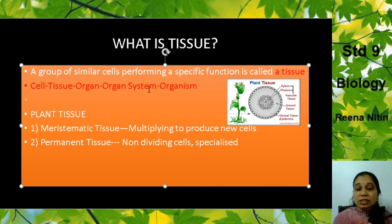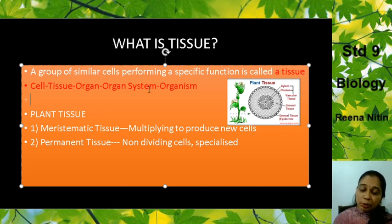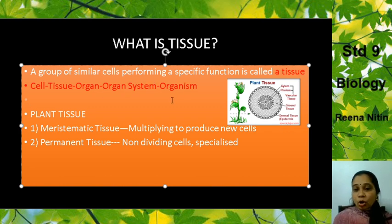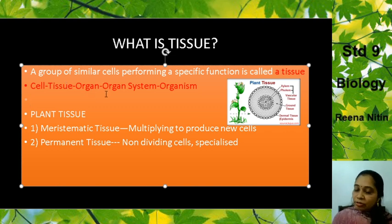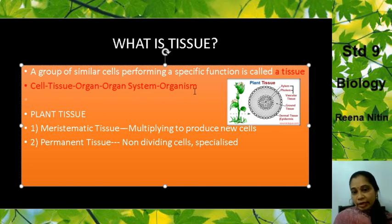Our body is made up of many systems — for example, the excretory system, digestive system, respiratory system. All these systems come together and they form our body. So our body is made up of all these organ systems and that is how an organism is made. To repeat: cells come together to form tissues, tissues come together to form an organ, organs come together to form an organ system, and organ systems all come together to form the body of an organism.